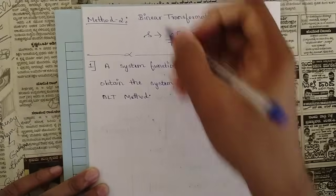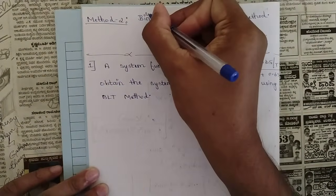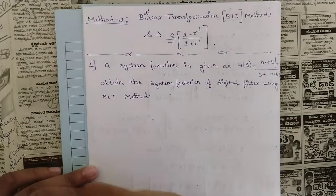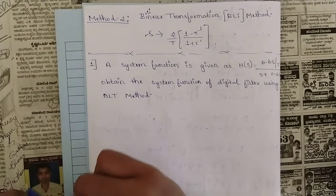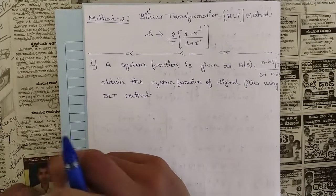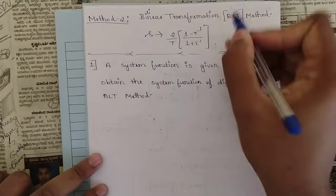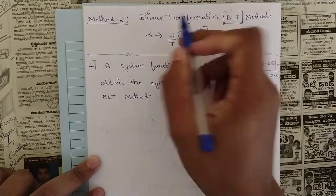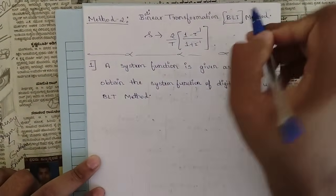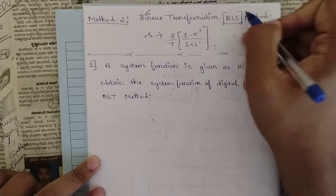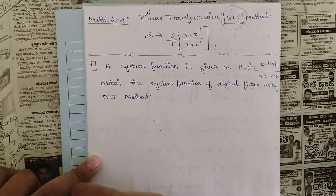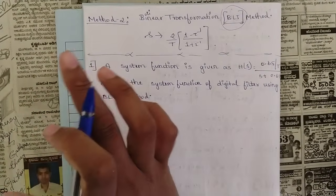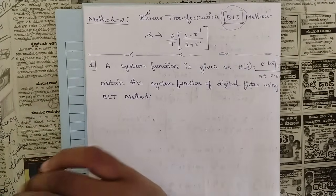This is the second method: the bilinear transformation method, or we can call it simply the BLT method. In questions they won't always give you the full name — sometimes they would mention only the term BLT.